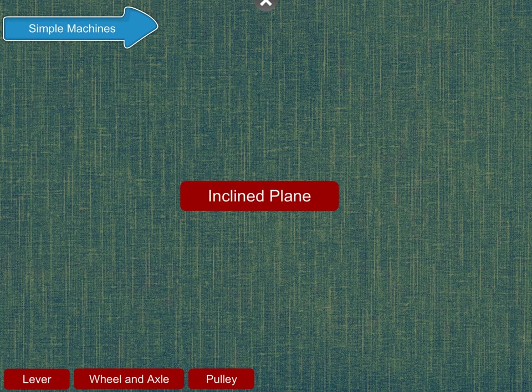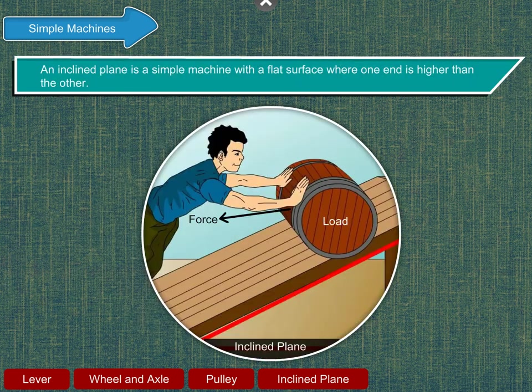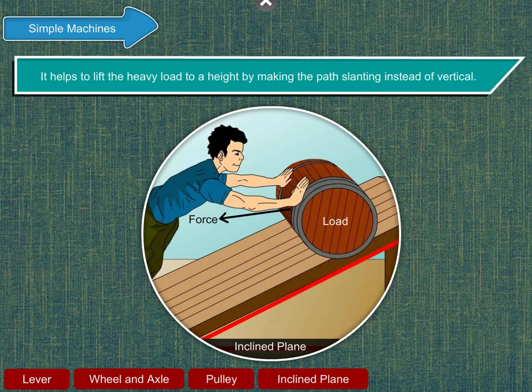An inclined plane is a simple machine with a flat surface where one end is higher than the other. It helps to lift the heavy load to a height by making the path slanting instead of vertical.